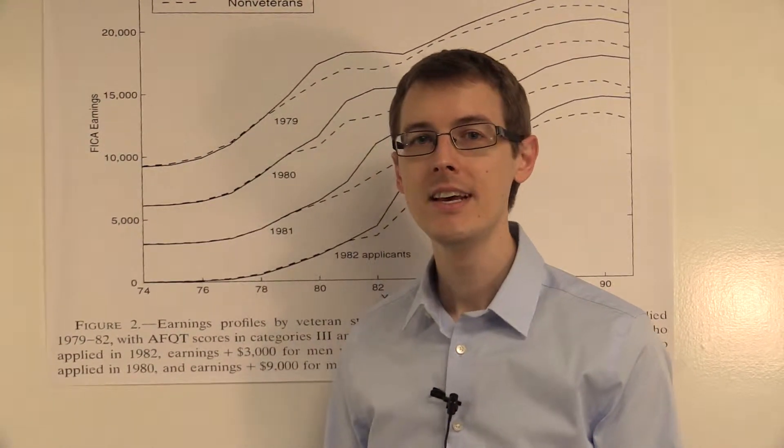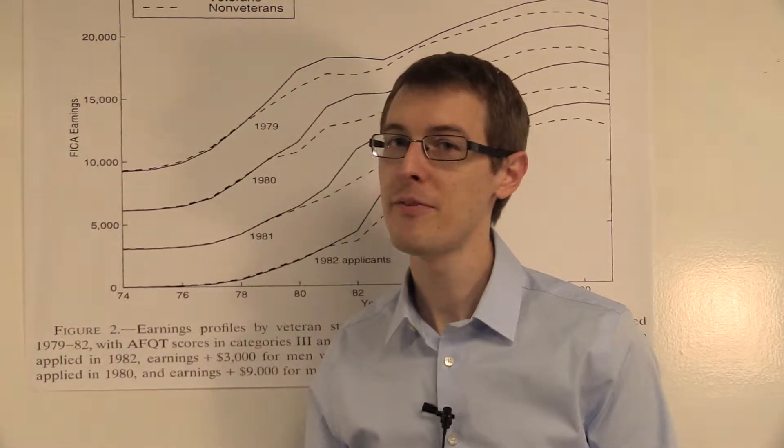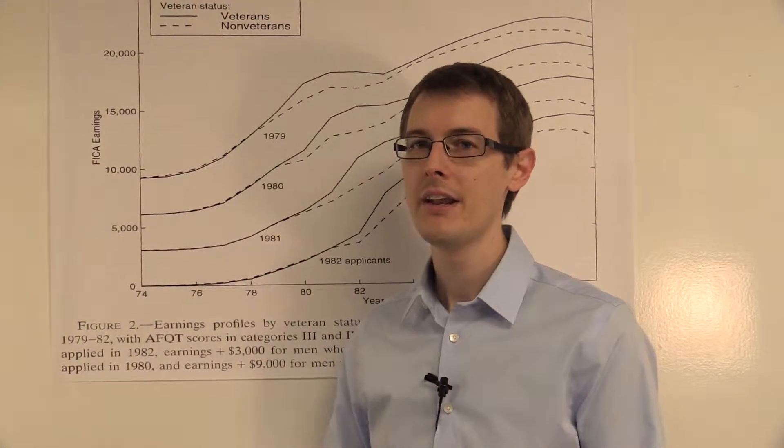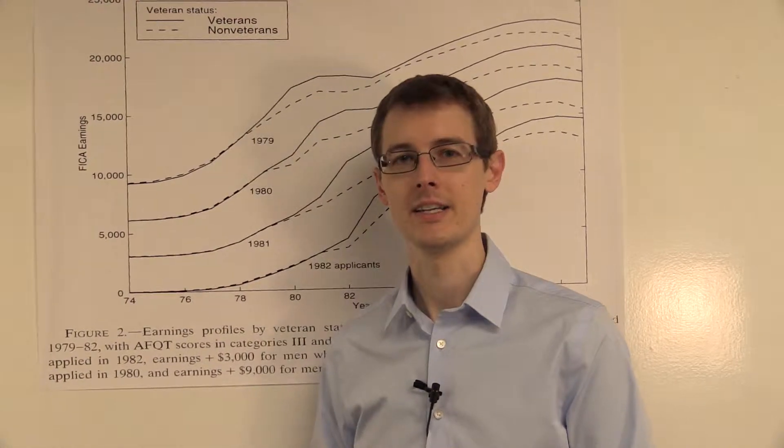And whatever that is, that could explain this difference in income, not the fact that they joined the military. So in order to disentangle that, we're going to have to do something else. And we'll see how Angrist does that in the next module.